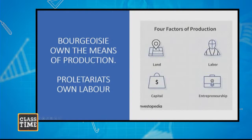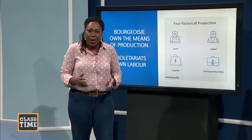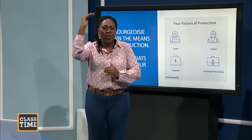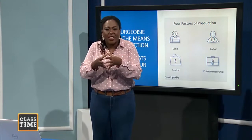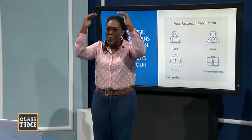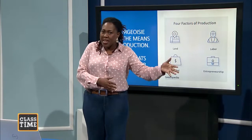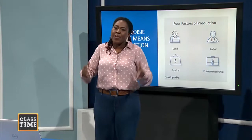Marx says that if man is to produce — and man must produce to live — you need the means of production, but you also need the labor. That means the bourgeois need the proletariats and the proletariats need the bourgeois. We have to come together to produce so that we can all live. The small rich group needs the large poor group, and vice versa.